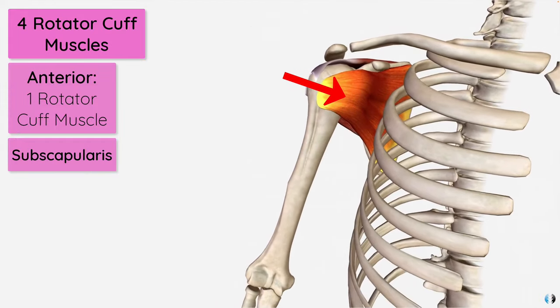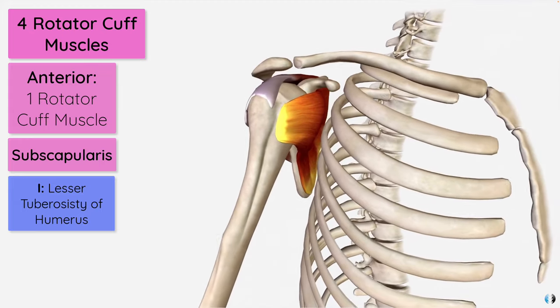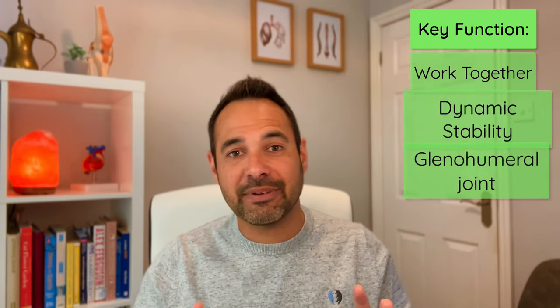The subscapularis sits on the anterior surface of the scapula, inserting into the lesser tuberosity of the humerus, and is considered in isolation as a medial rotator of the glenohumeral joint. But the key function of the rotator cuff is to work together to provide dynamic stability of the glenohumeral joint.